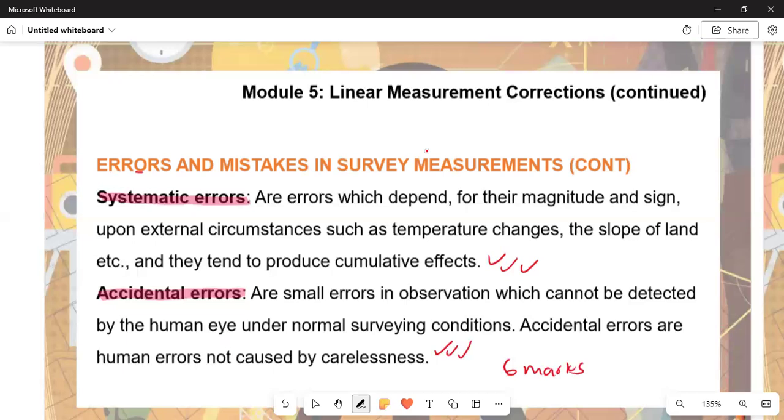Accidental errors are small errors in observation which cannot be detected by the human eye under normal surveying conditions. Accidental errors are human errors and are not caused by carelessness. This is for a maximum of six marks, meaning three marks each.